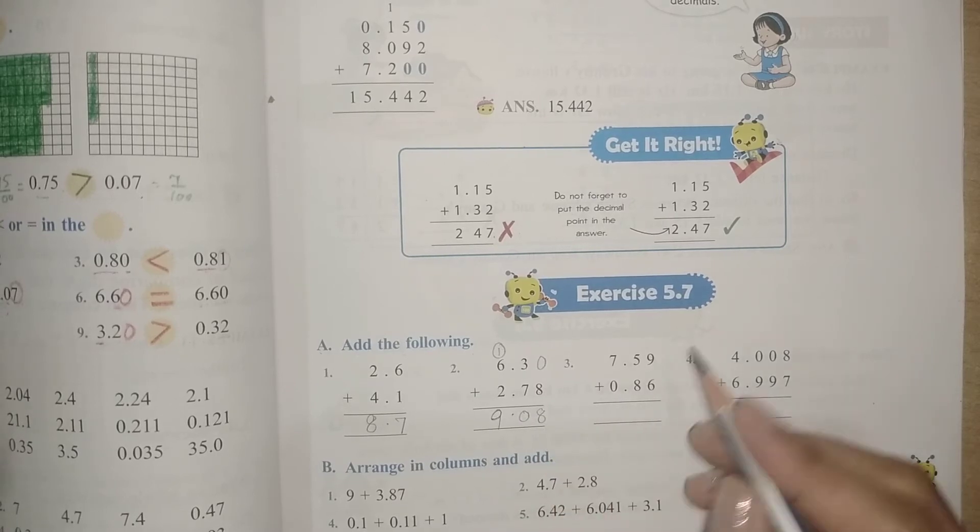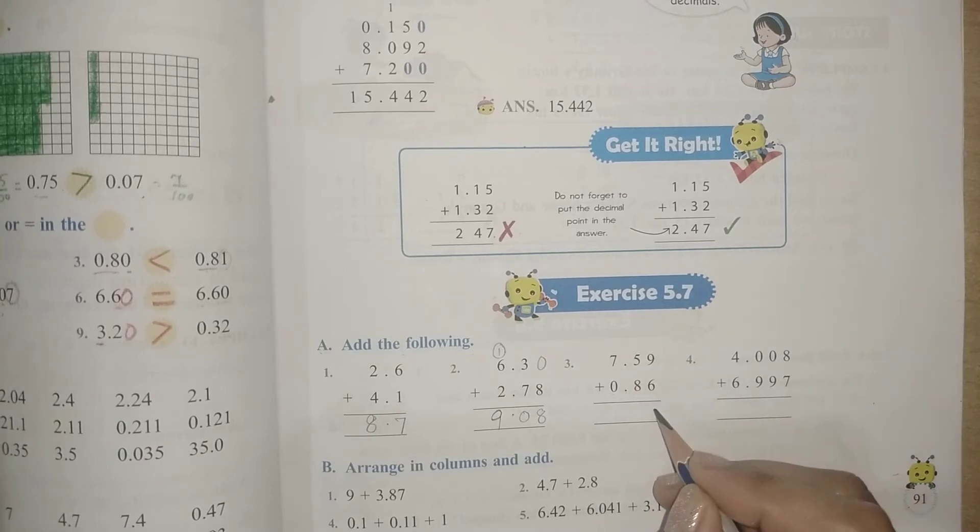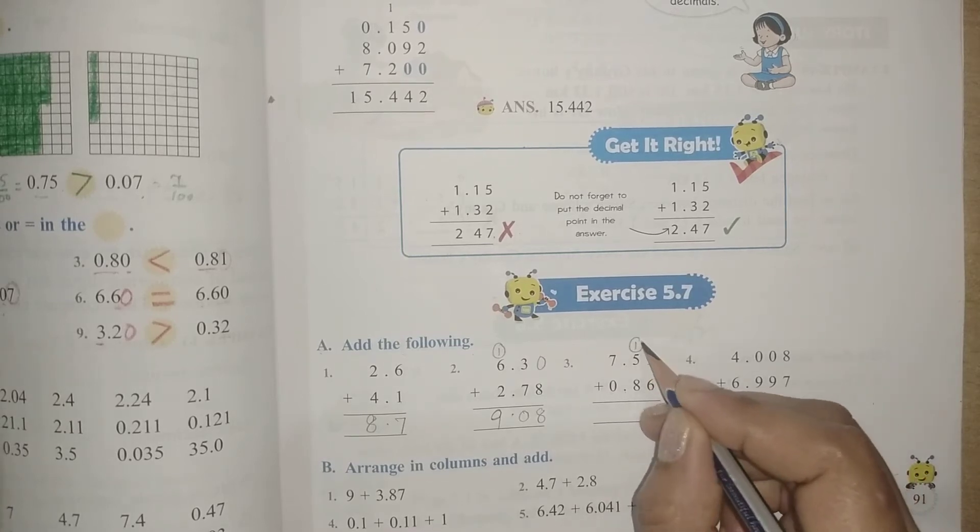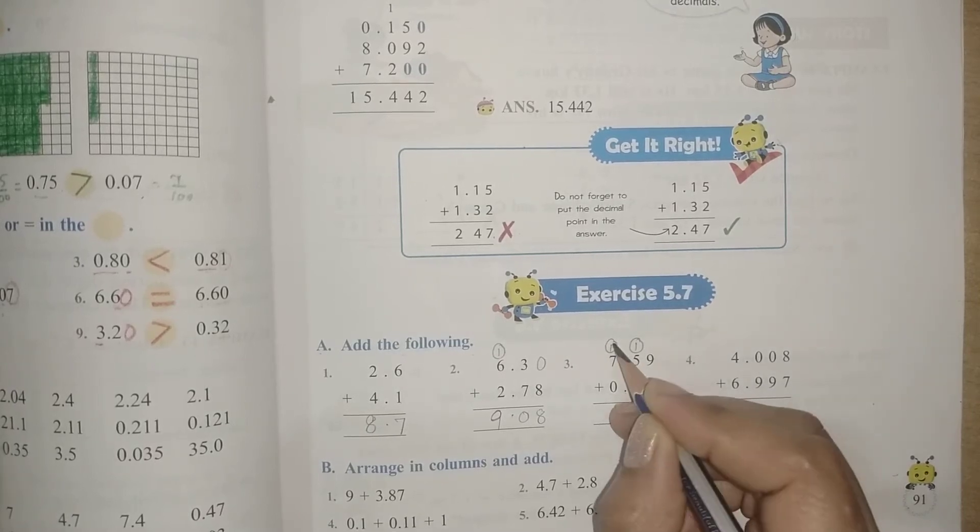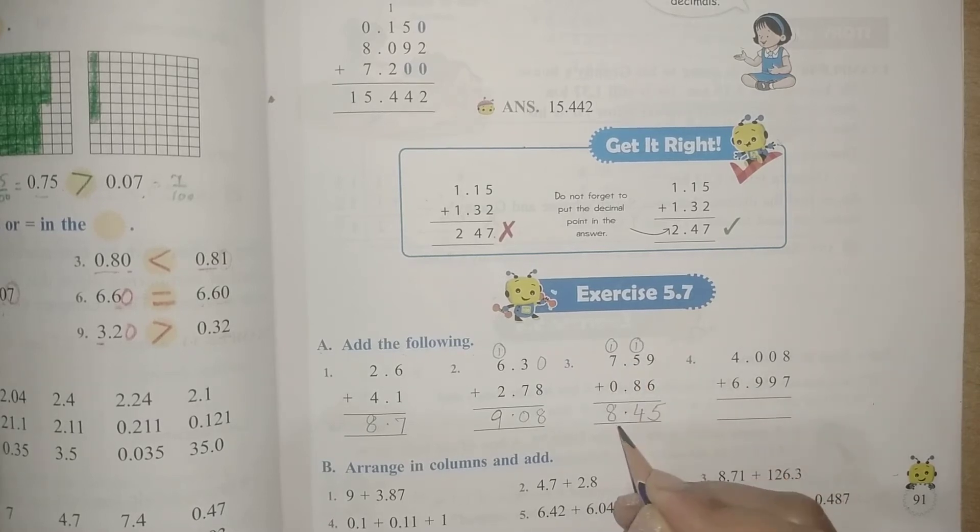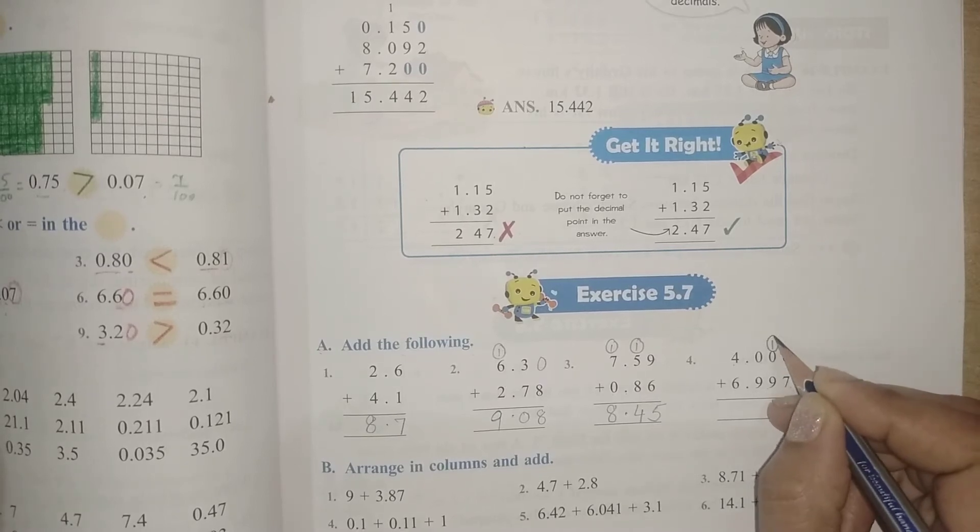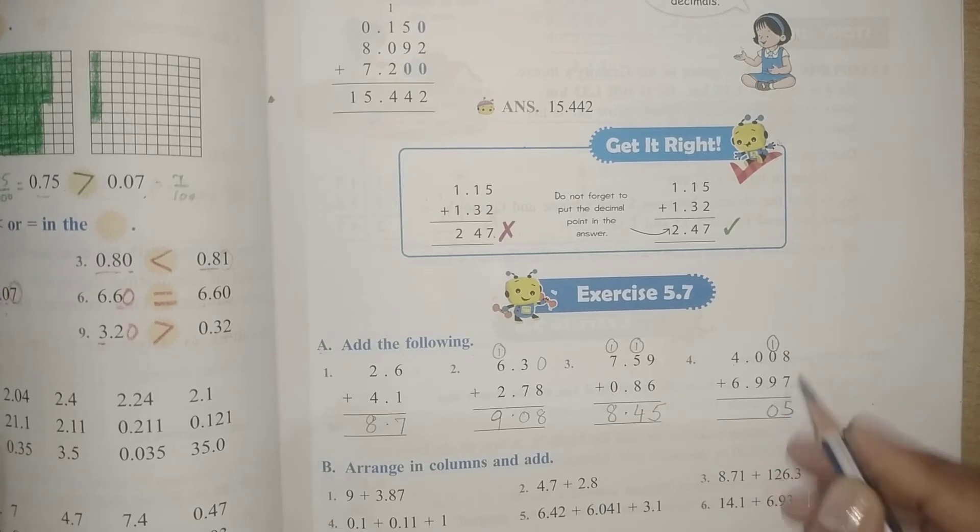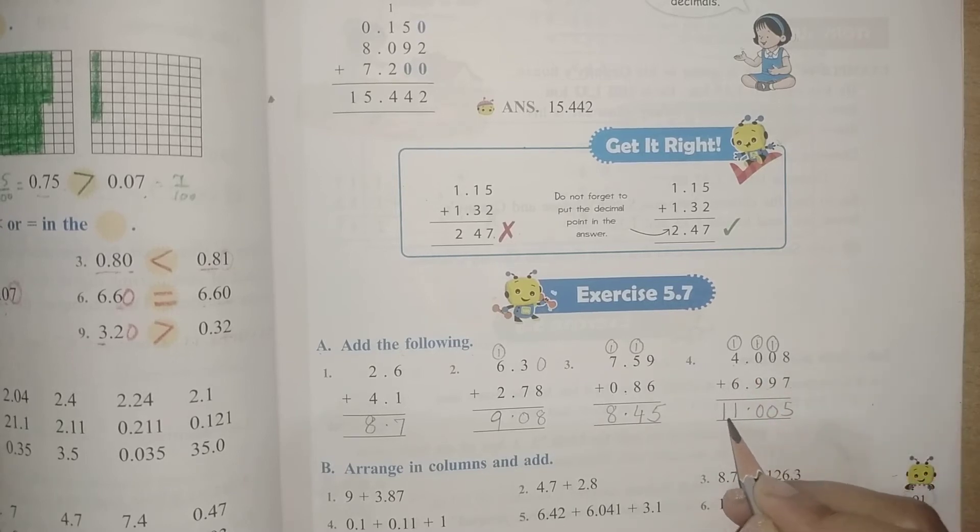Next we have 7.59 and 0.86. So 9 plus 6 is 15, then 1 carry over, 1 plus 5 is 6, 6 plus 8 is 14, then 1 carry over here. Point, 1 plus 7 is 8, 8 plus 0 is 8. So the answer is 8.45. Next is 4.008 plus 6.997. 8 plus 7 is 15, then 1 carry over, 1 plus 0 is 1, 1 plus 9 is 10. 1 carry over, then 1 plus 0 is 1, 1 plus 9 is 10. Again 1 carry over. Point, 1 plus 4 is 5, 5 plus 6 is 11. So it is 11.005. Now let us move to the next part.